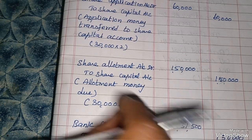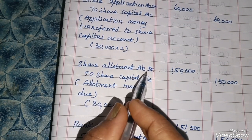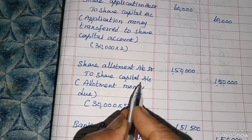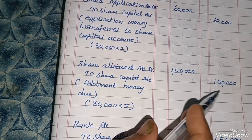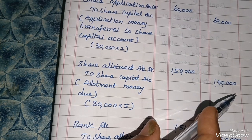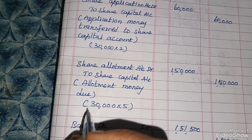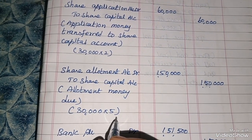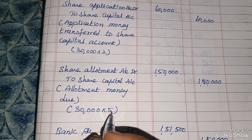Allotment due entry. Share Allotment Account Dr. to Share Capital Account — 1,50,000 / 1,50,000. Allotment money due: 30,000 × 5 = 1,50,000. Allotment money is Rupees 5 per share.